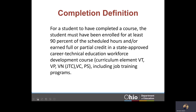With this introduction of the Perkins V Concentrator definition, Ohio was tasked with determining what it means for a student to have completed a course. Through internal and external stakeholder groups, data simulations, and careful analysis, the Office of CareerTech developed the following completion definition: for a student to have completed a course, the student must have enrolled for at least 90% of the scheduled hours and/or earned full or partial credit in a state-approved Career Technical Education Workforce Development course.